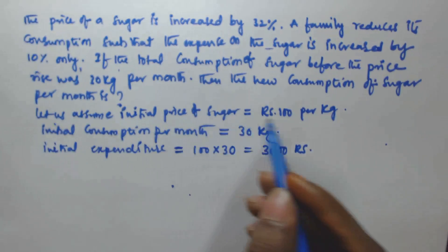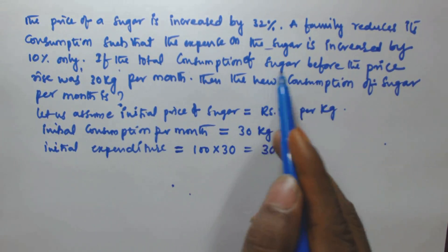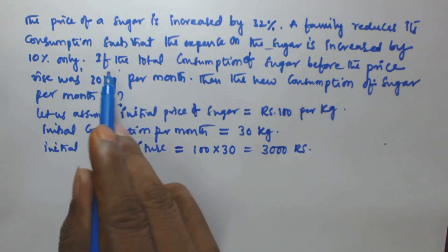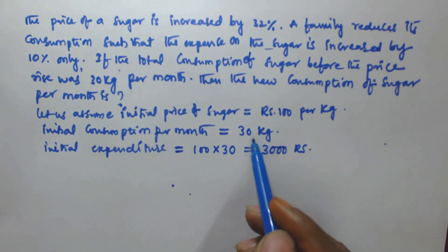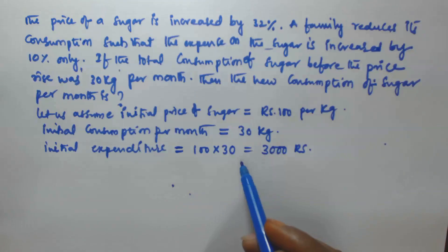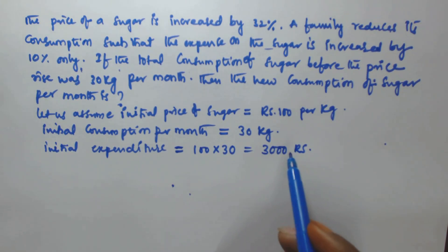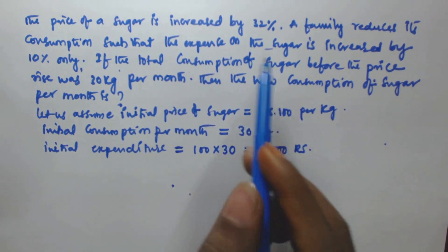So the initial price we assumed is 100 rupees. Before the price rise the consumption is 30 kg per month and the expenditure is going to be 100 into 30, which is 3000 rupees.